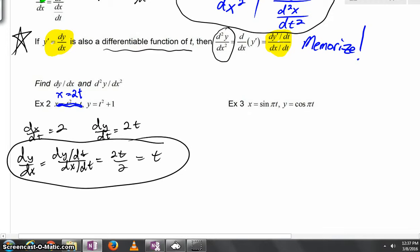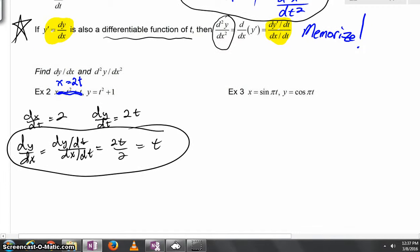Okay, picking up with the second derivative of example 2, realize what we have starred at the very top of the screen here. We've got d squared y all over dx squared. That's going to be dy prime dt all over dx dt.